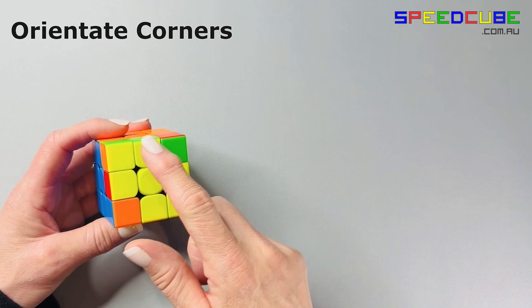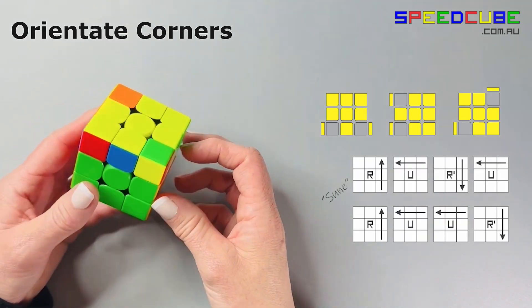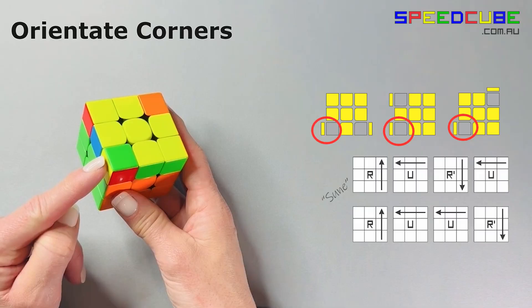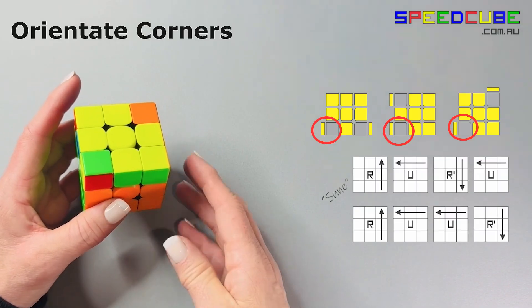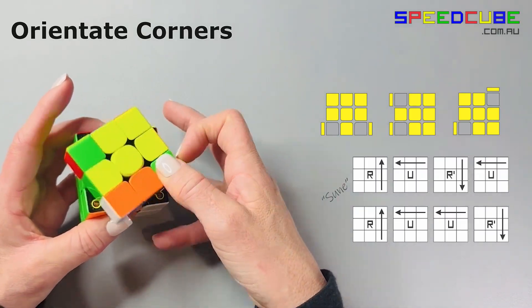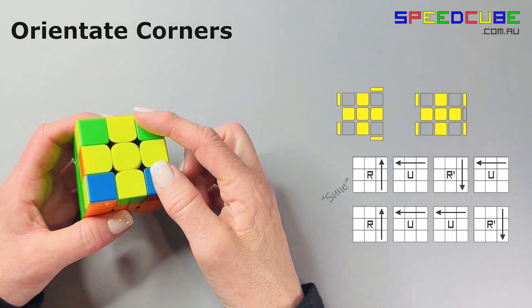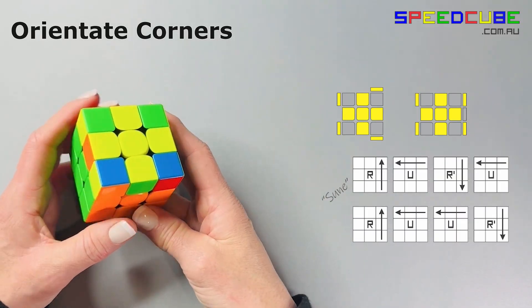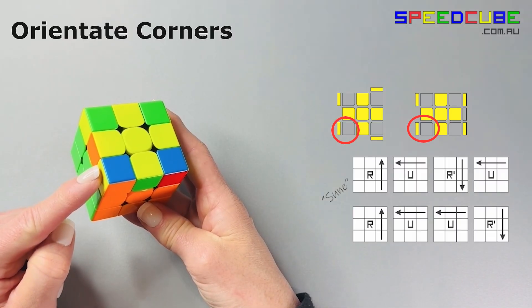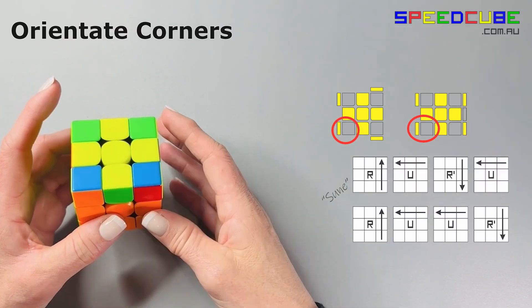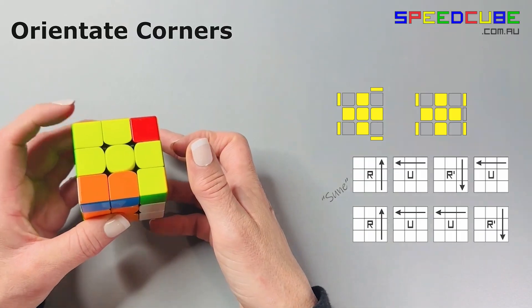If you have two corners facing upwards, then hold your cube so that you have a yellow sticker in this front left-hand side facing to the left. Now, perform this algorithm again. This takes you to this case where you have no stickers facing up. Again, make sure you have a yellow sticker on this left-hand front side.